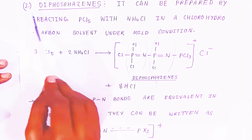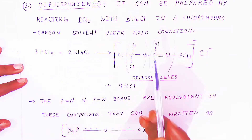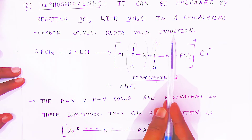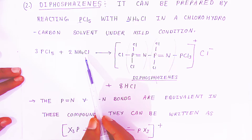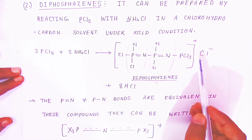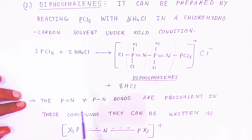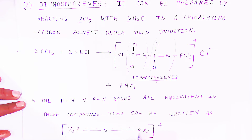For Diphosphazenes, they can be prepared by reacting phosphorus pentachloride with ammonium chloride in a chlorohydrocarbon solvent under mild conditions. Three molecules of phosphorus pentachloride react with two molecules of ammonium chloride to give a Diphosphazene salt product, with elimination of HCl. The product contains two repeating P=N units, hence it is called a Diphosphazene salt. In Diphosphazenes, the P=N double bonds and P-N single bonds are equivalent in number.